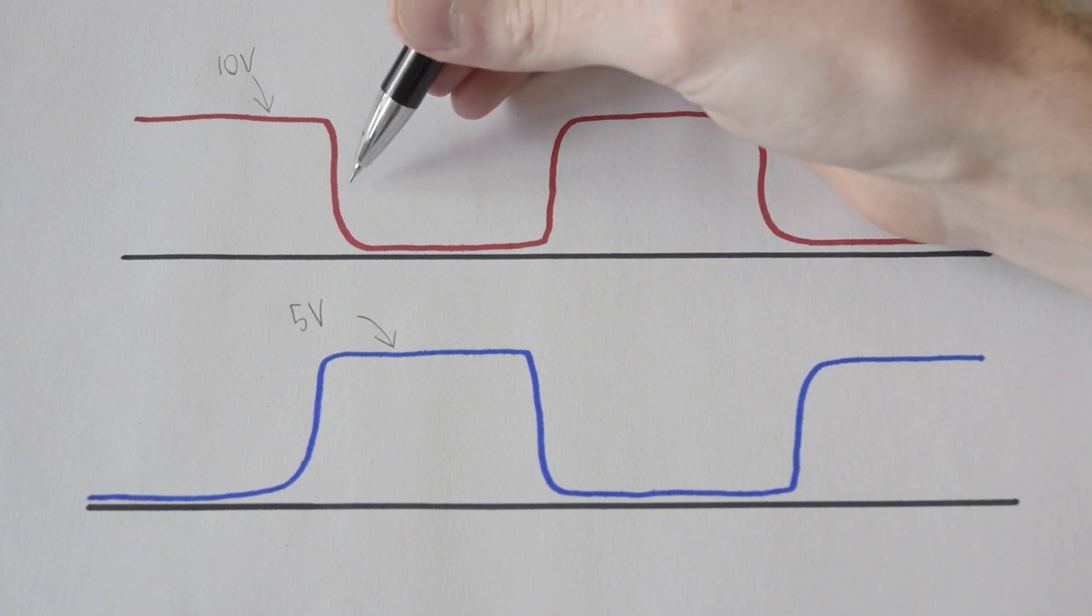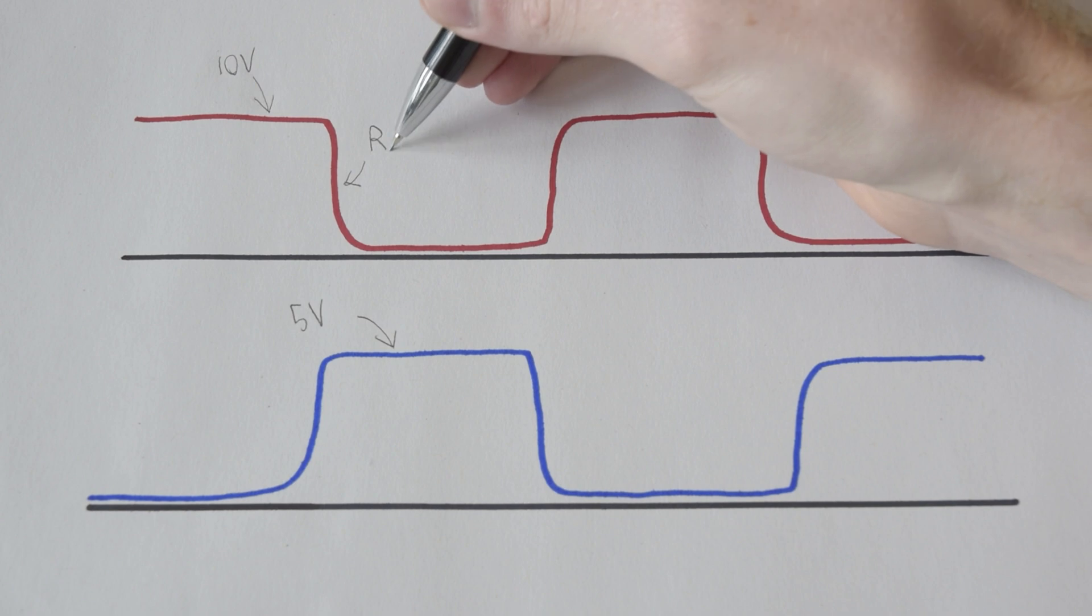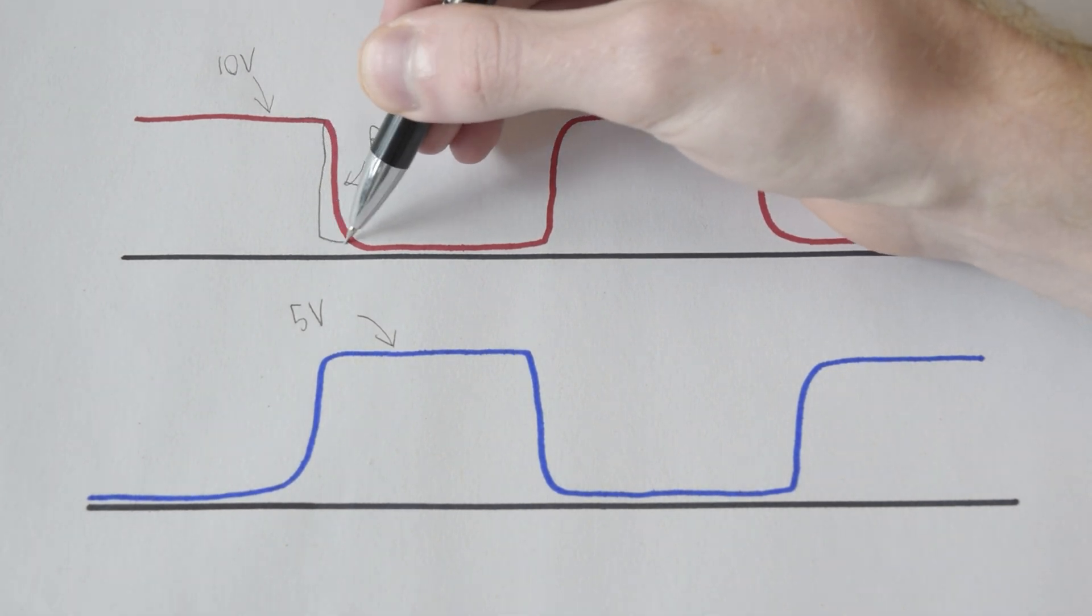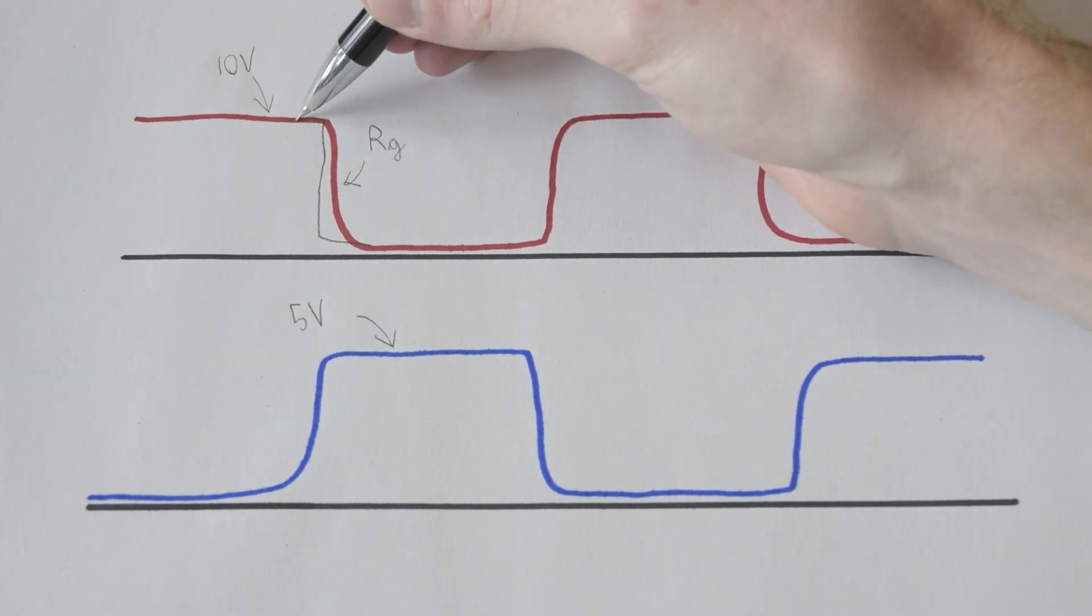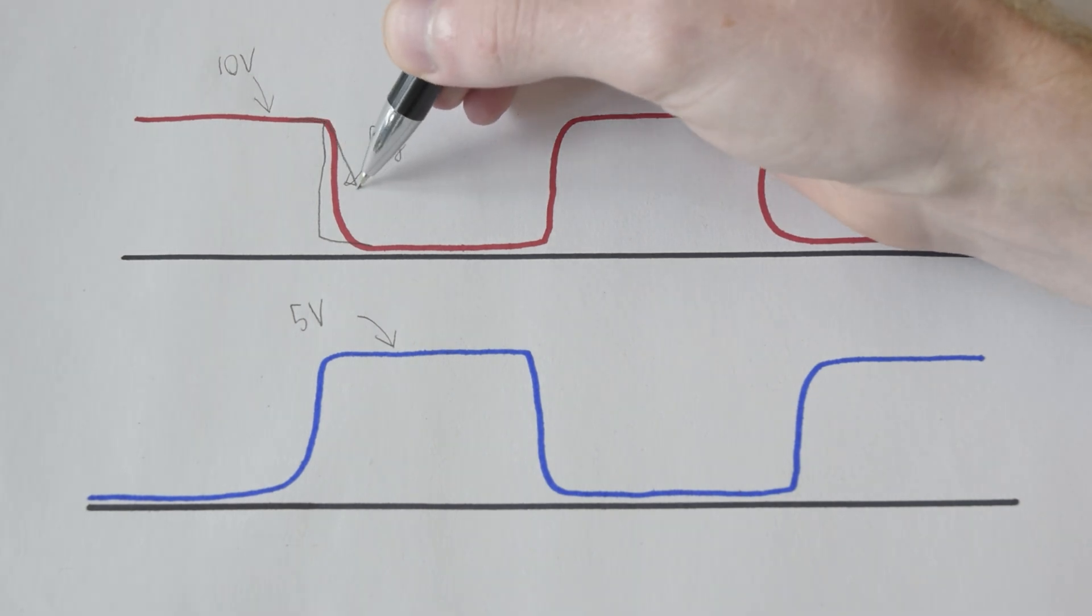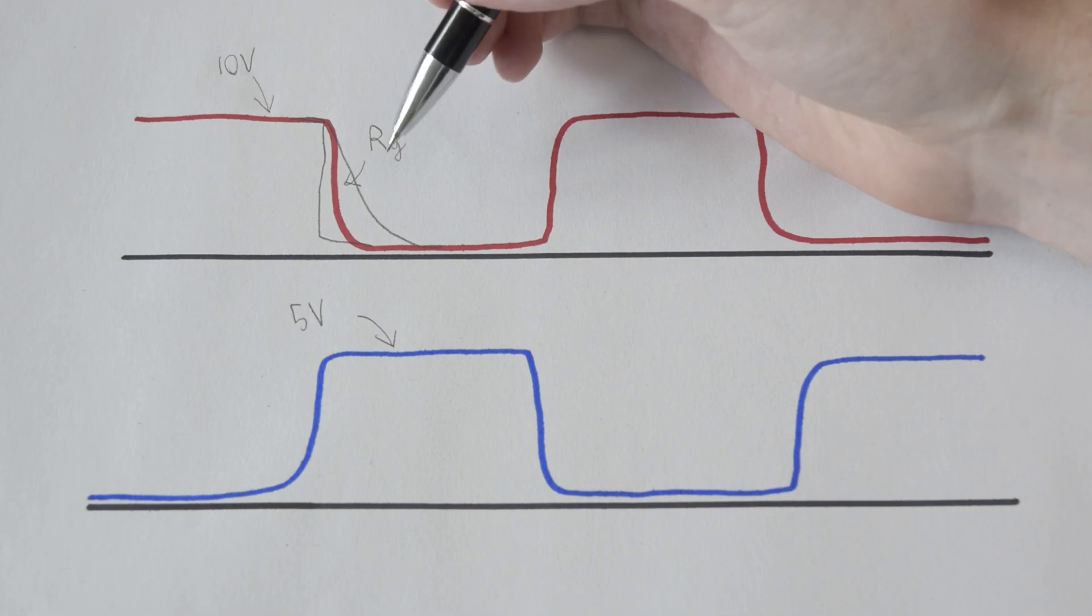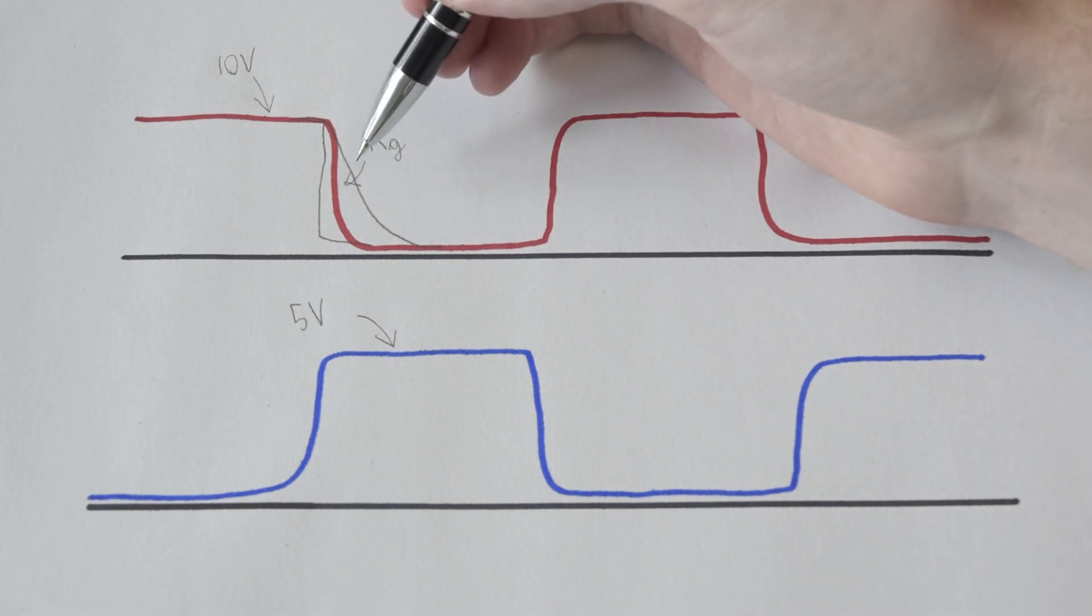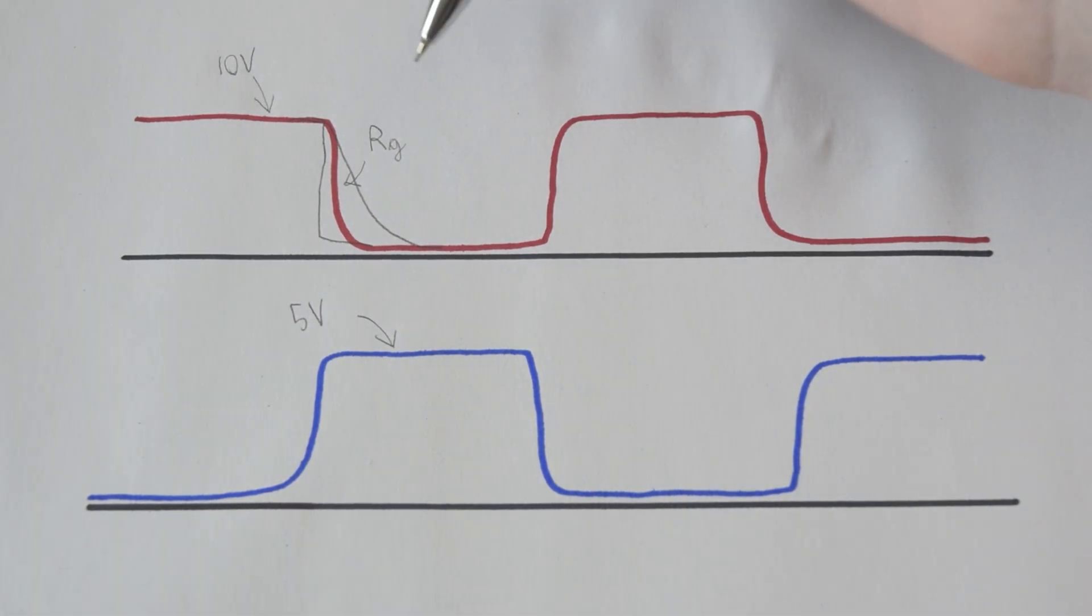The next thing we could potentially change is the steepness of this slope, which is determined by the gate resistance, or RG. A stronger gate resistor, so that's a smaller value, will turn the MOSFET on and off faster, whereas a larger value will take a longer time to discharge the gate source capacitance. A gentle slope here represents more switching losses, because we're spending more time between on and off, and in this middle state the MOSFET has to dissipate quite a lot of power. Again this may be a little more challenging to implement, because the gate resistor is obviously a component, you can't just go in and change it.